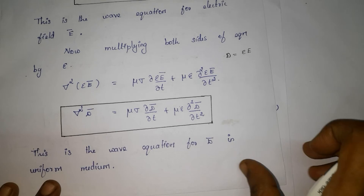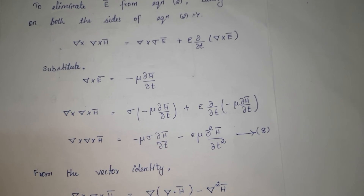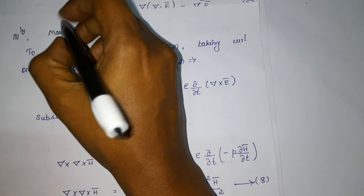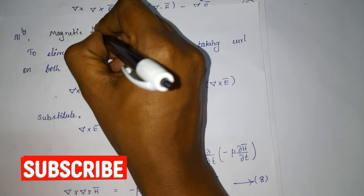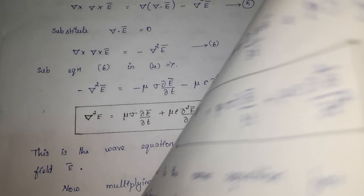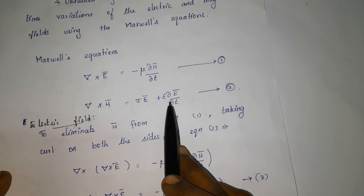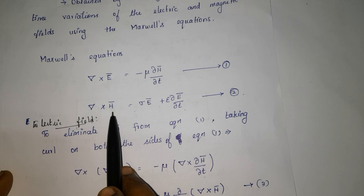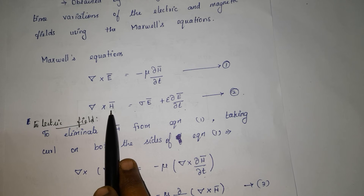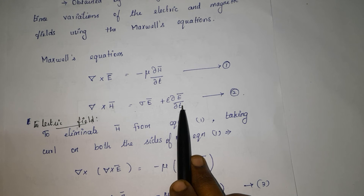Next, we are going to derive the general wave equation for magnetic field. Taking the Maxwell second equation: del cross H vector is equal to sigma E vector plus epsilon times partial E vector divided by partial T. Here we have H vector on the left side and electric field on the right side. We are going to eliminate the electric field from equation number 2 by taking curl on both sides.